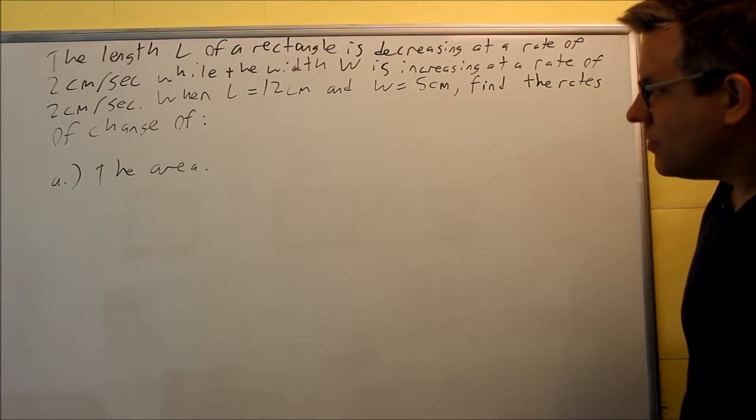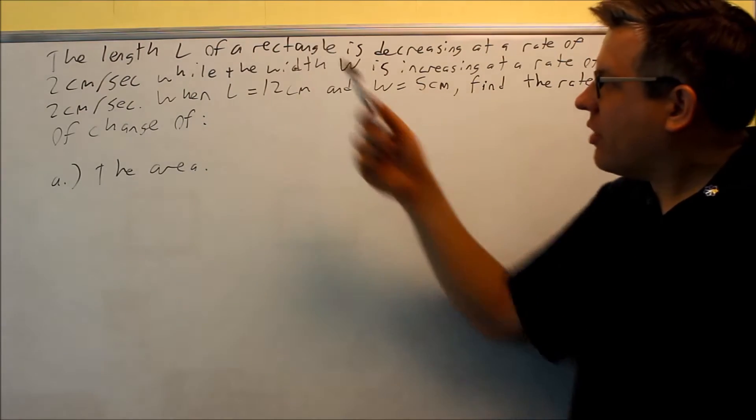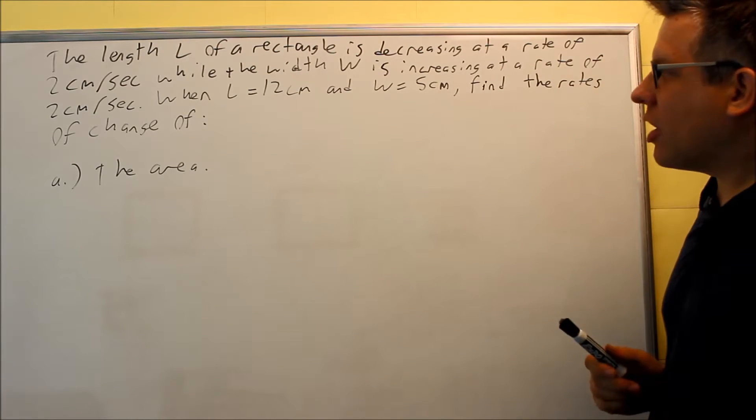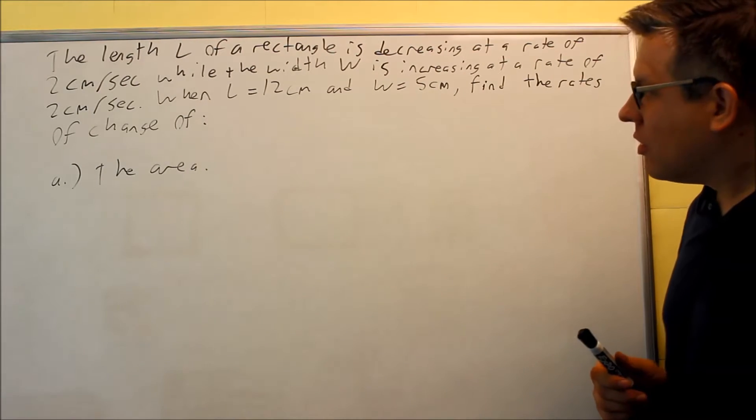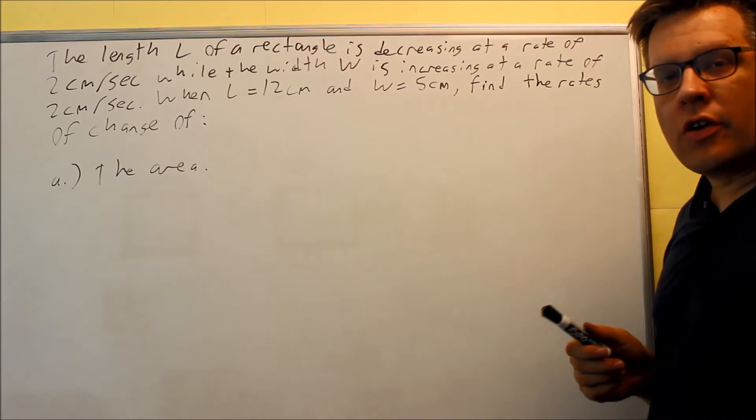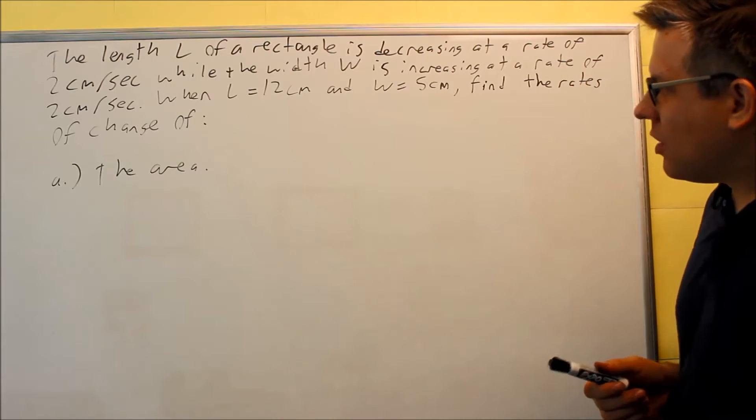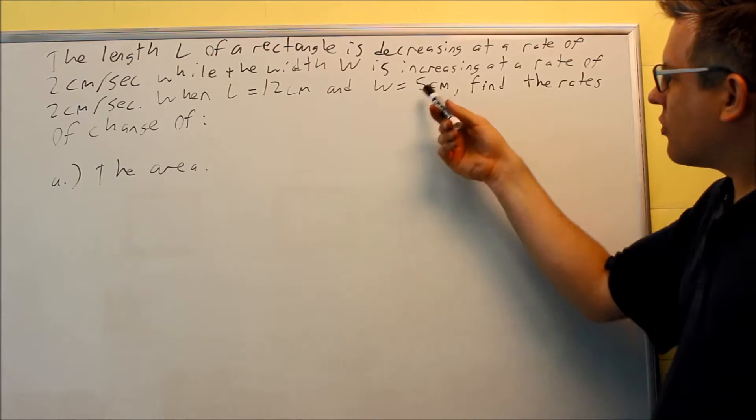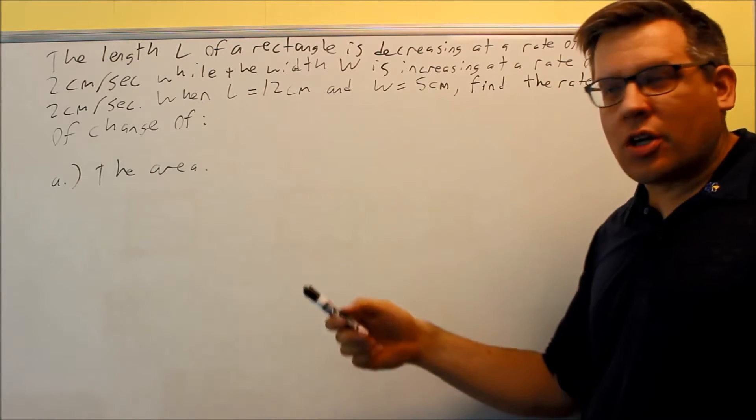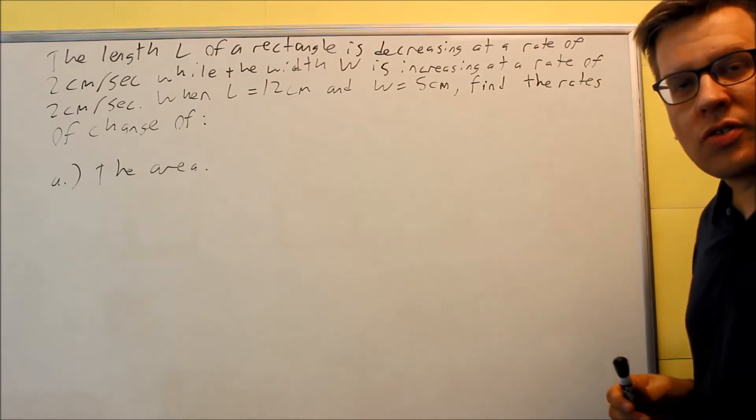This is going to be a three-part problem. We're given that the length L of a rectangle is decreasing at a rate of 2 centimeters per second, and the width is increasing at a rate of 2 centimeters per second. When the length is 12 and the width is 5, we're going to find the rate of change. The first one we're going to do is the area.